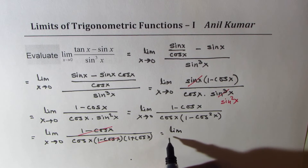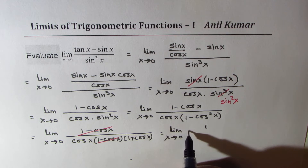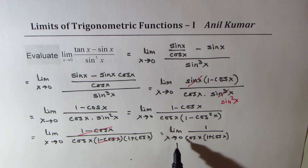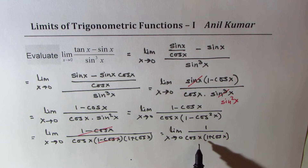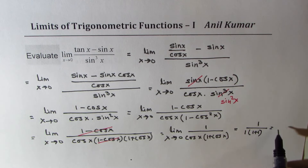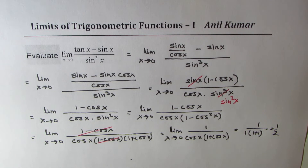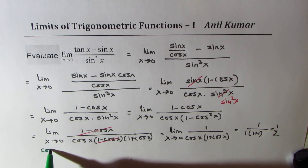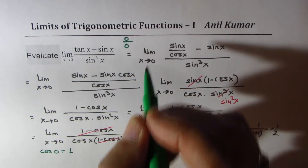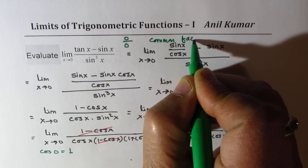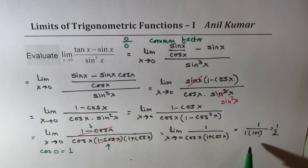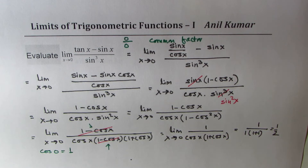After cancellation, we get the limit as x approaches 0 of 1 over (cos(x)·(1 + cos(x))). Now we can directly substitute x = 0. Since cos(0) = 1, this becomes 1 over (1·(1+1)) = 1/2. So the answer is one half. The strategy was to remove the common factor so we could substitute and evaluate.